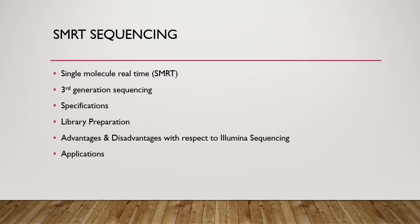SMRT sequencing boasts longer read lengths upwards of 60,000 base pairs, transcriptome sequencing leading to identification of novel isoforms, and a sequencing technique useful for detection of base modifications such as methylation. We will also cover one real-world application detecting mutations in cancer genes and another application in which SMRT sequencing was used to identify virulence genes in Staph aureus in a pediatric setting.